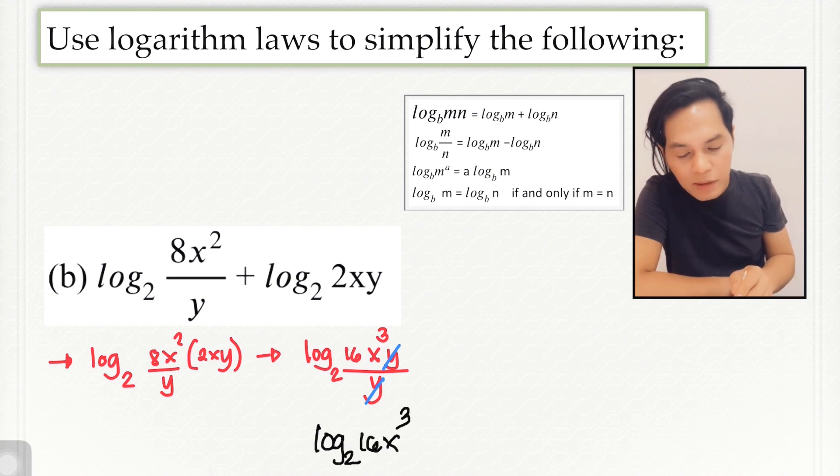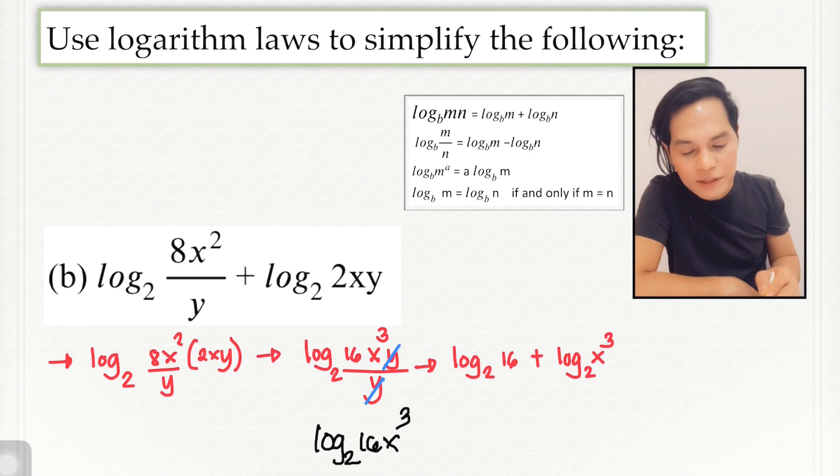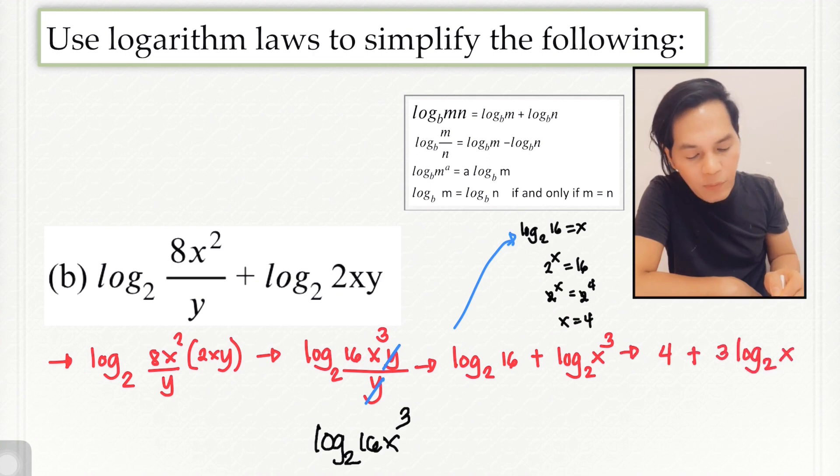And we can separate this by applying the laws, so from multiplication to addition, because we can simplify this, the log of 16 to the base 2. And what is the value for that? That is equal to 4. And then this one, apply the law again. The power here becomes the coefficient. Our final answer is 4 plus 3 times the log of x to the base 2.